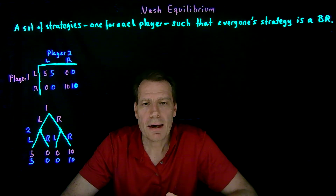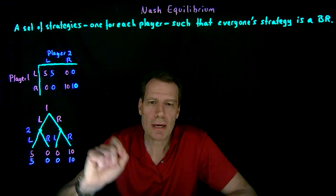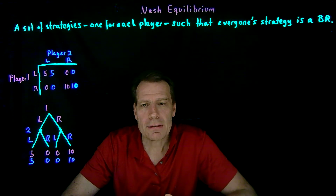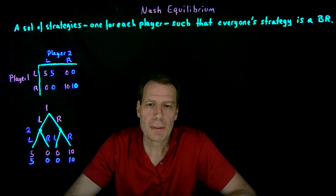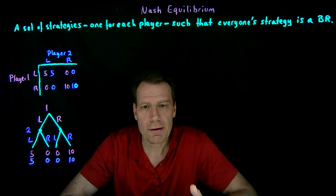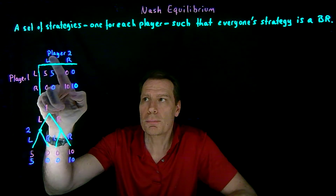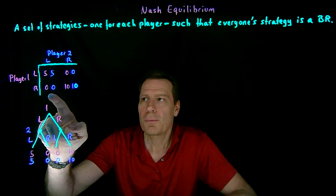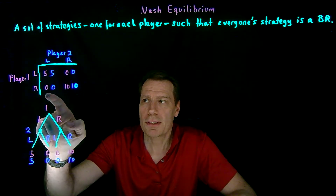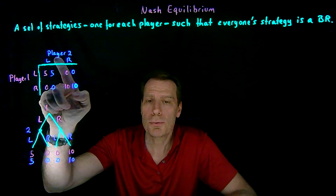So how would we find a Nash equilibrium in games like these? Let's start with a simultaneous move game. The easiest way is to start with one of the strategies for one of the players. If player two plans to play left, player one knows he's going to end up in this column, which means he's choosing between a payoff of five and zero — and five is better than zero. So player one playing left is a best response to player two playing left.